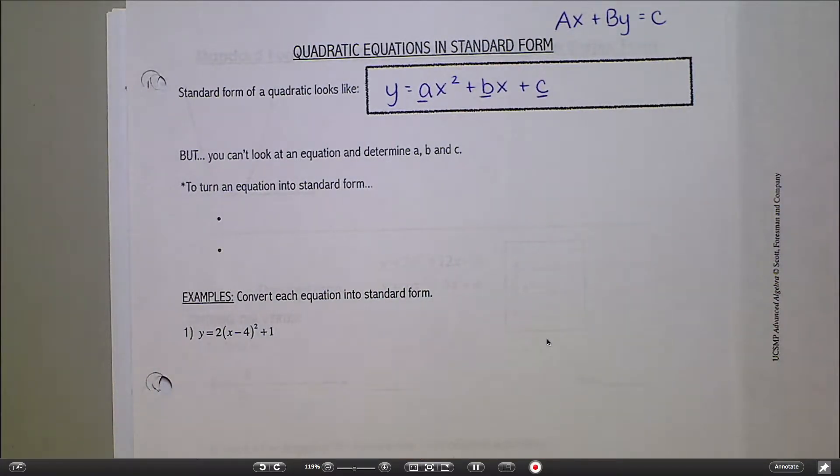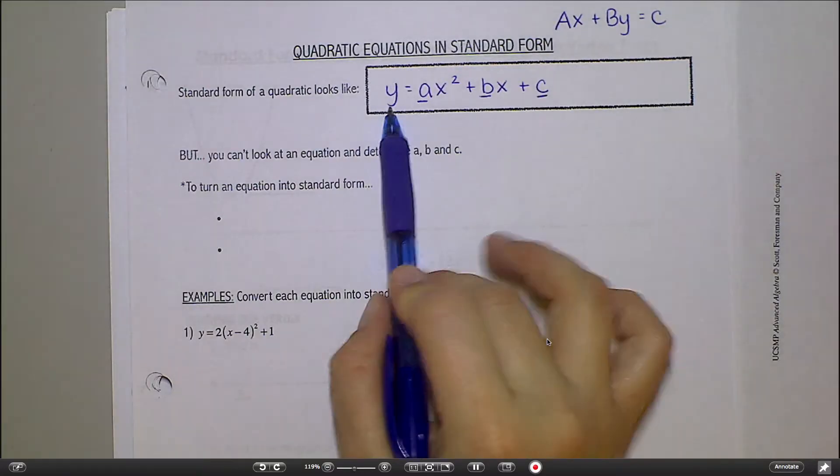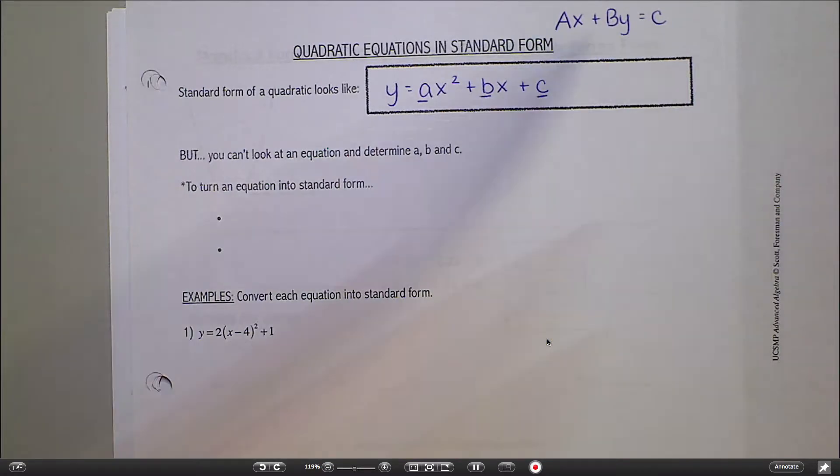Standard form for a quadratic kind of works along the same lines, but it's a little bit different. Here's what standard form looks like here: Y equals AX squared plus BX plus C. And then A, B, and C will be numbers just like before. So standard form has no crazy parentheses, nothing moved to one side or the other. It's everything on one side and simplified. But in this one, the Y is by itself. Up here, the Y was not by itself.